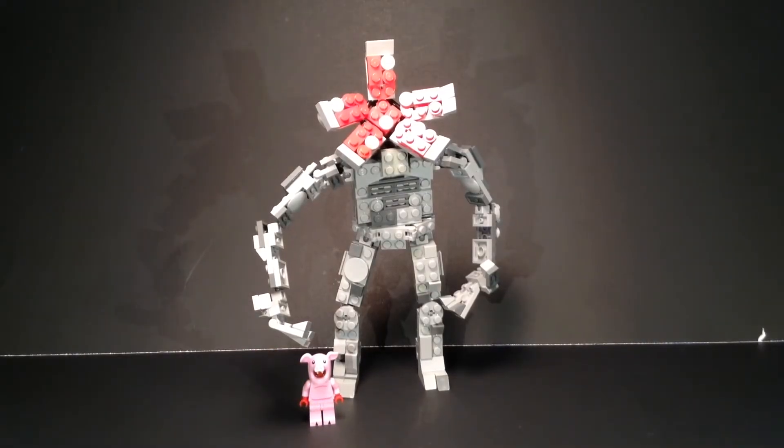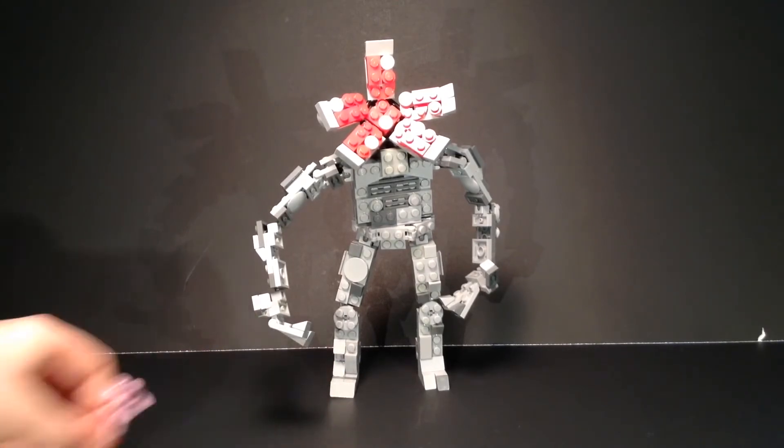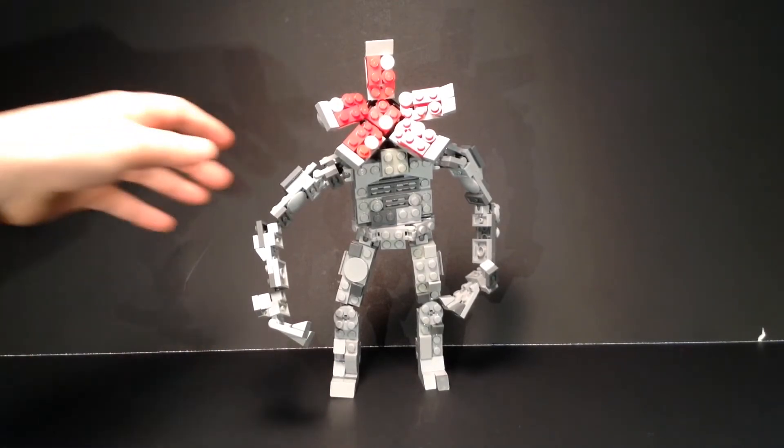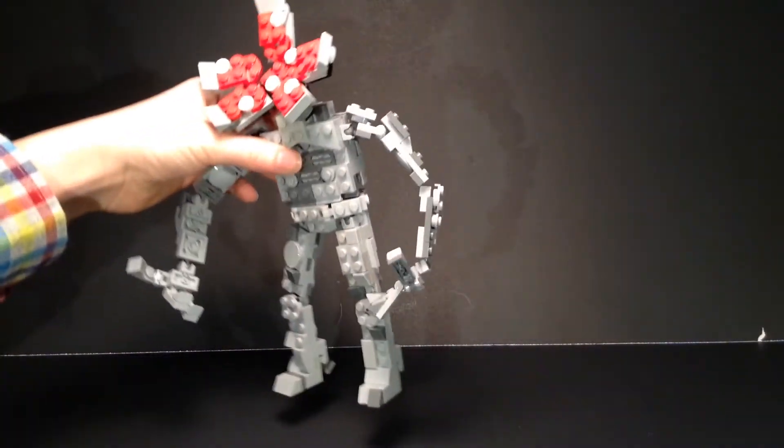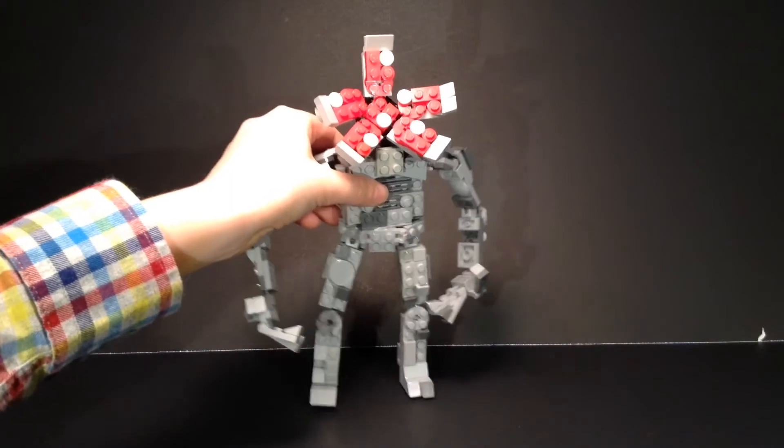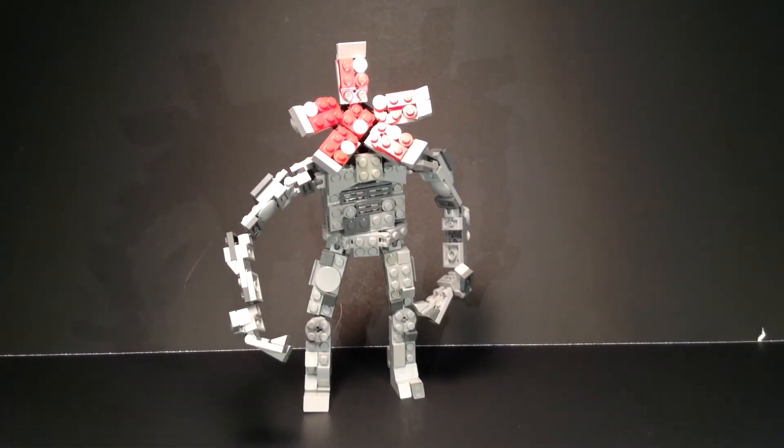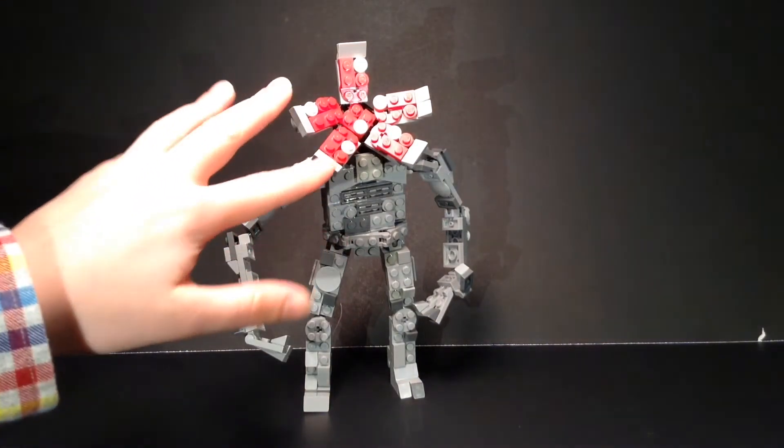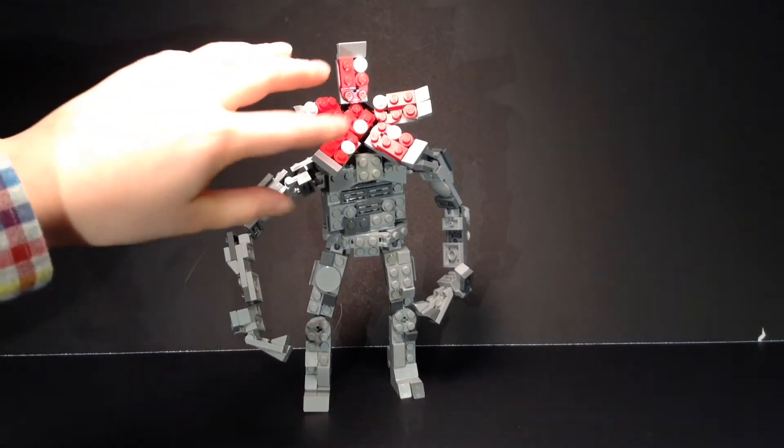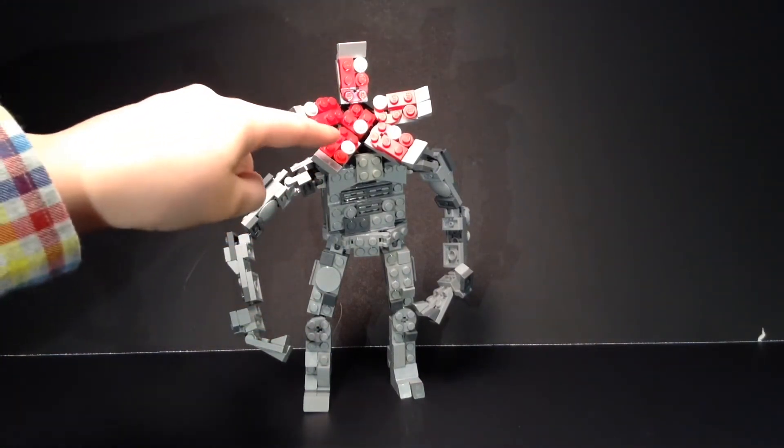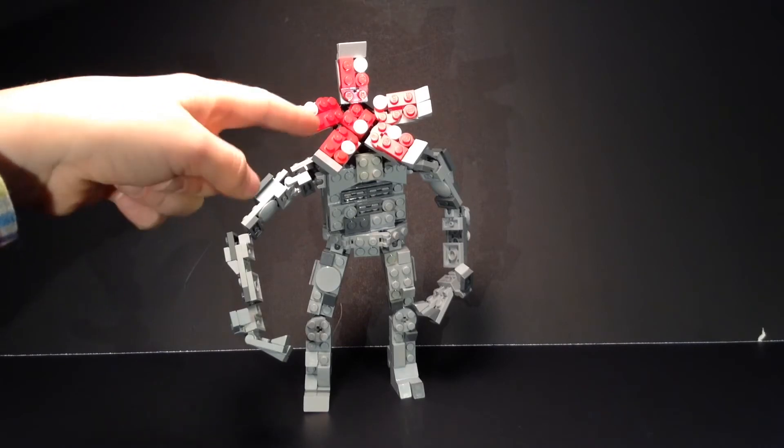So the main colors that I used were light gray and dark gray including a little bit of black for some of the hinges. Most of the hinge pieces that I used were from Mixels which I believe Lego has discontinued and I'm really sad about because Mixels were sweet. Then for the top, for the kind of head part, I used red and white.